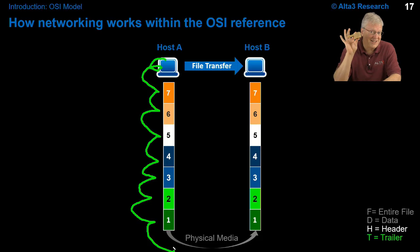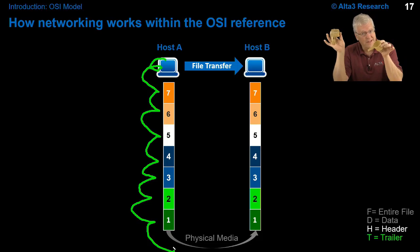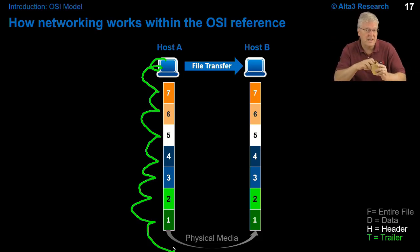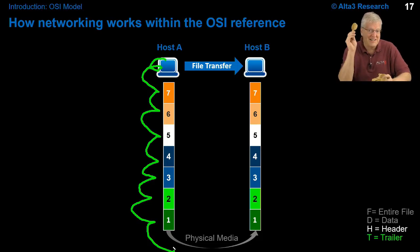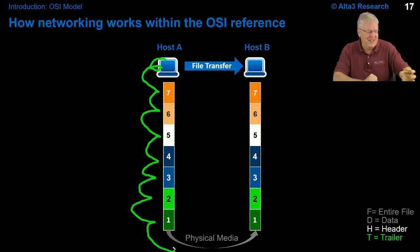Layer 6 accepts it as a service data unit and adds its overhead — another cup stacked on. Now it's a layer 6 protocol data unit, and we pass it down to layer 5, which adds its own overhead to make a layer 5 protocol data unit. We pass it down as a service data unit to layer 4, layer 3, and so forth until we reach the bottom. The data we're actually sending looks small, but by the time it gets on the wire, it looks much larger — that's how encapsulation works.